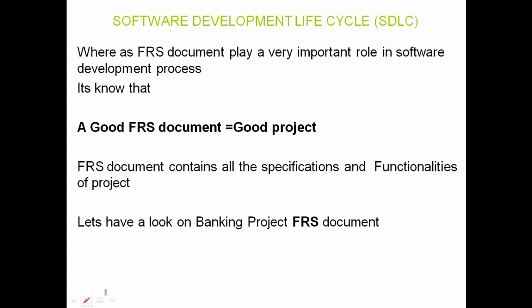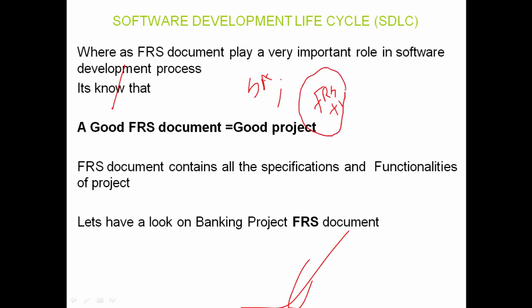Let me explain with a simple scenario — these examples may not necessarily occur in organizations, but they illustrate how important the FRS is. Let's assume the system analyst has developed an FRS document but misunderstood the requirements, or unknowingly made a mistake in the FRS. So the functionality document itself contains an error — it could be a misunderstanding or a communication error. Whatever the reason, the document has been developed with that mistake in it.